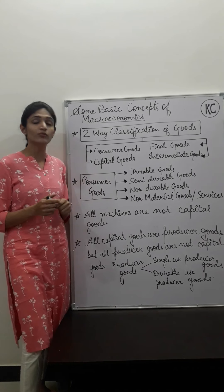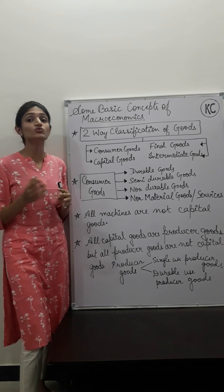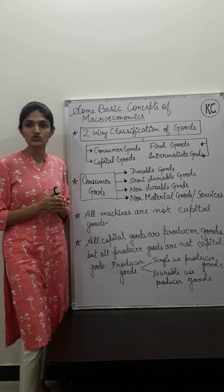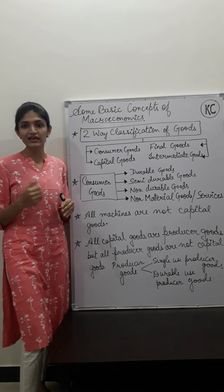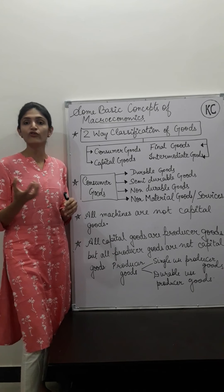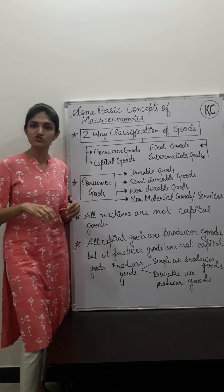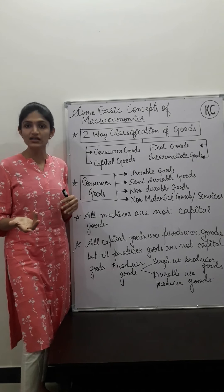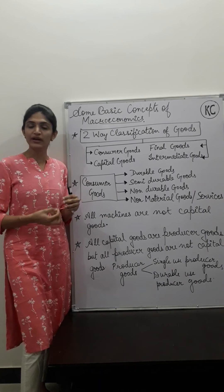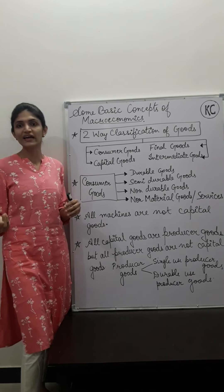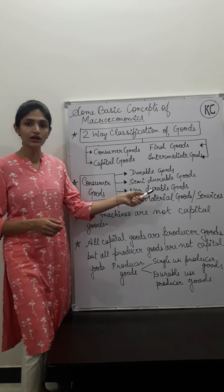Third category is non-durable goods. Non-durable goods are single-use goods. If you use them one time, then they are finished — you can't reuse them again. For example, if you purchase one liter of milk and consume it, you cannot consume it again in the form of milk. Similarly, if you make bread and consume it once, that is finished. Such goods are known as non-durable goods.